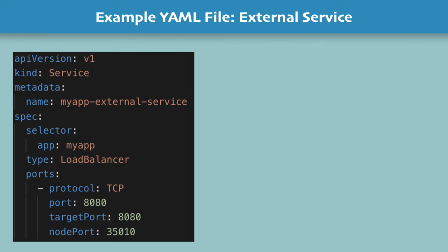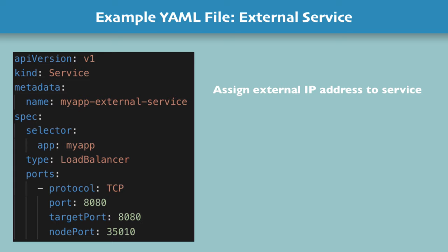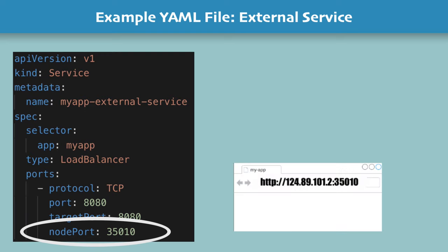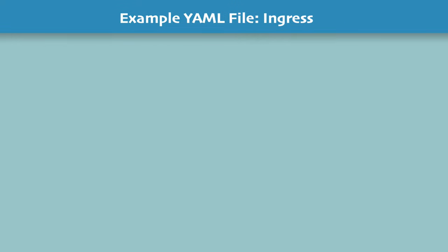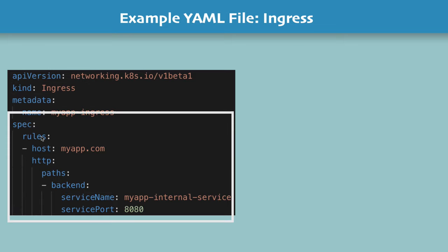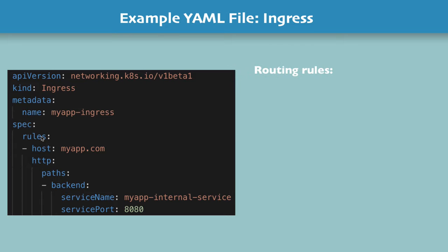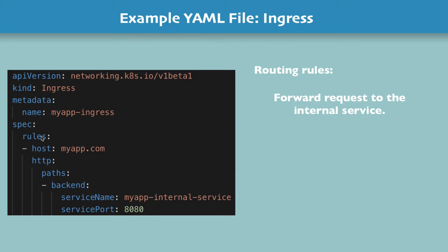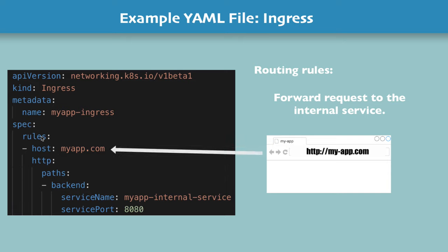To understand the main concepts: the service is of type load balancer, which means we are opening it to the public by assigning an external IP address. The port number is where the user can access the application. Now with ingress, it looks different. The kind is ingress instead of service. In the specification, you have routing rules, which define that all requests to a given host must be forwarded to an internal service. This is the host that the user will enter in the browser, and in ingress you just define a mapping.